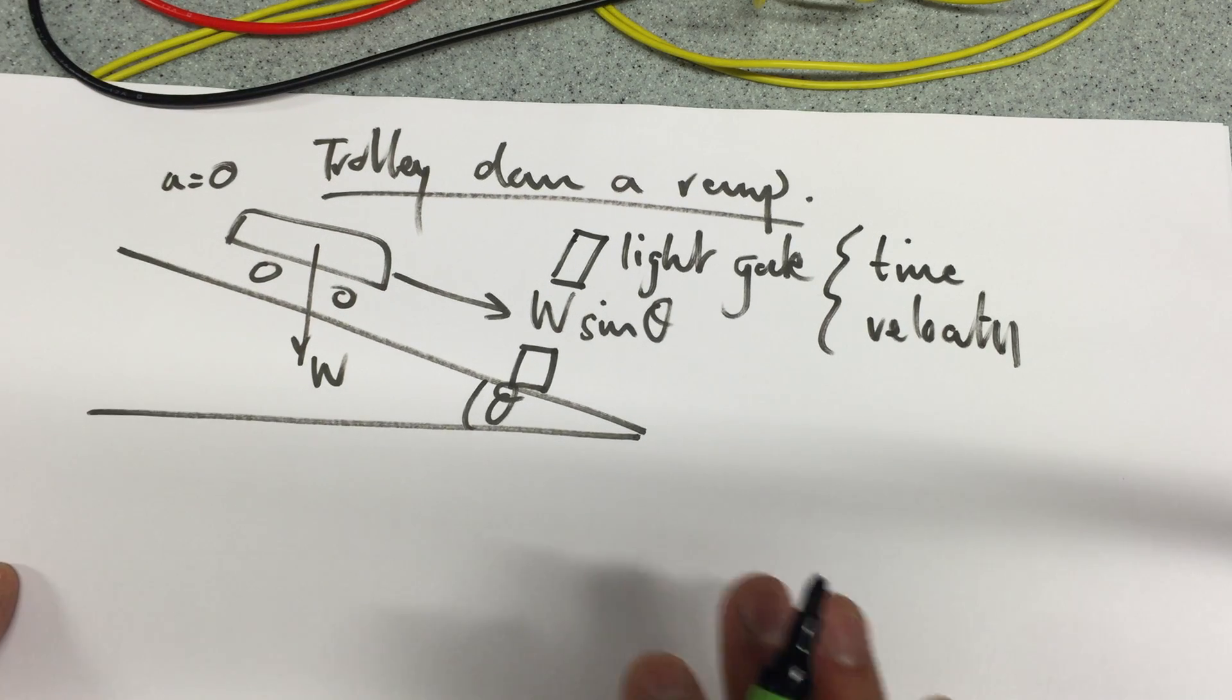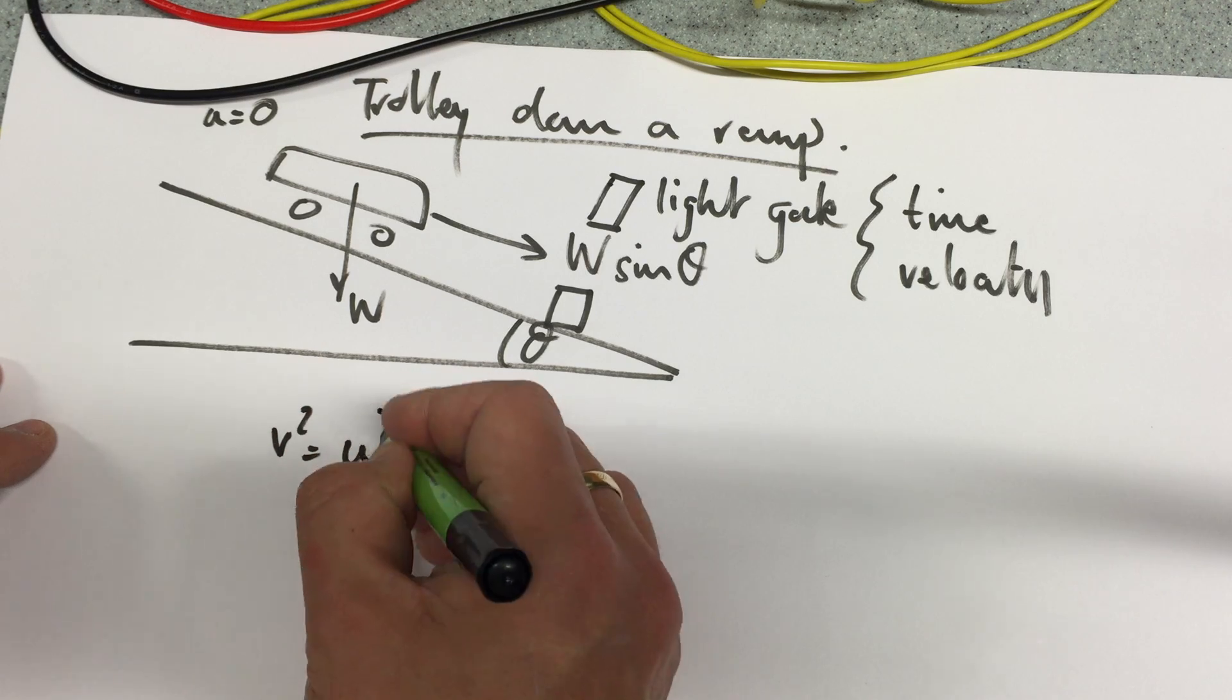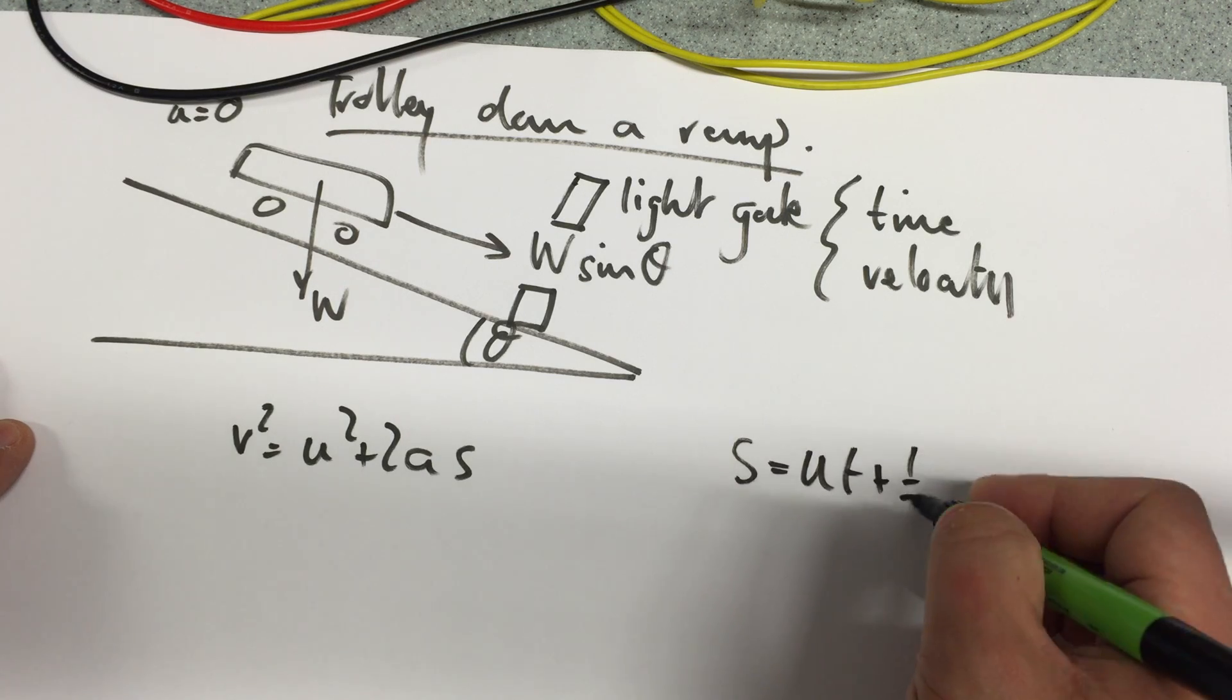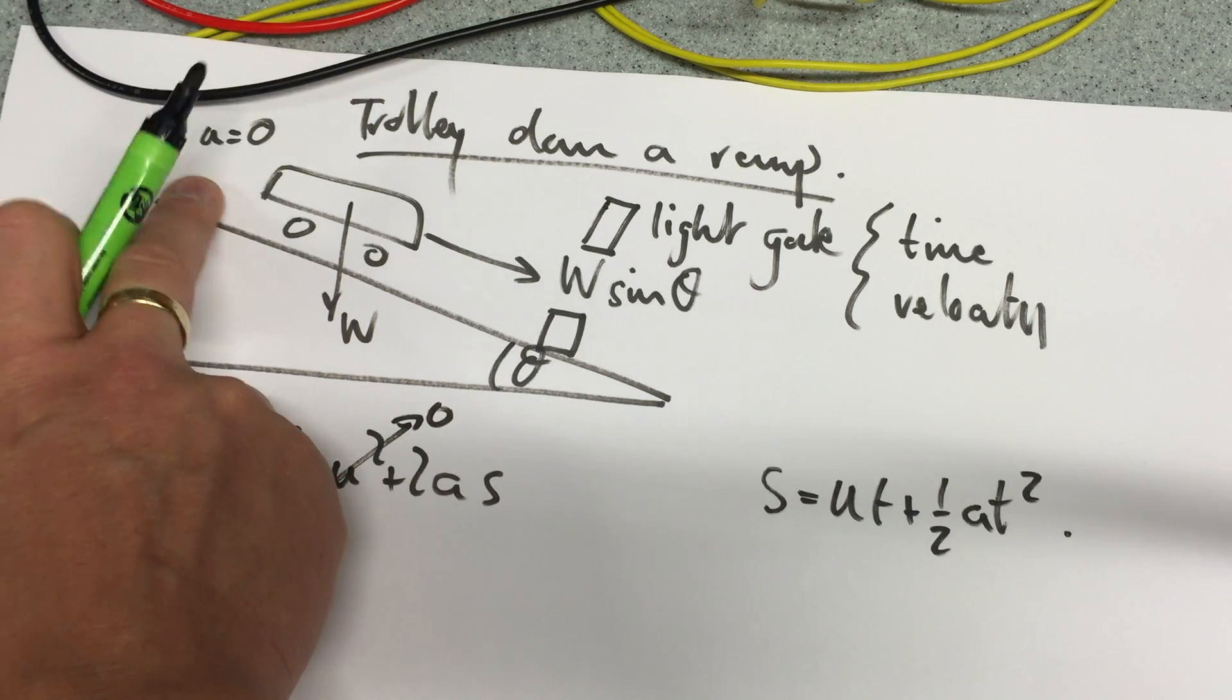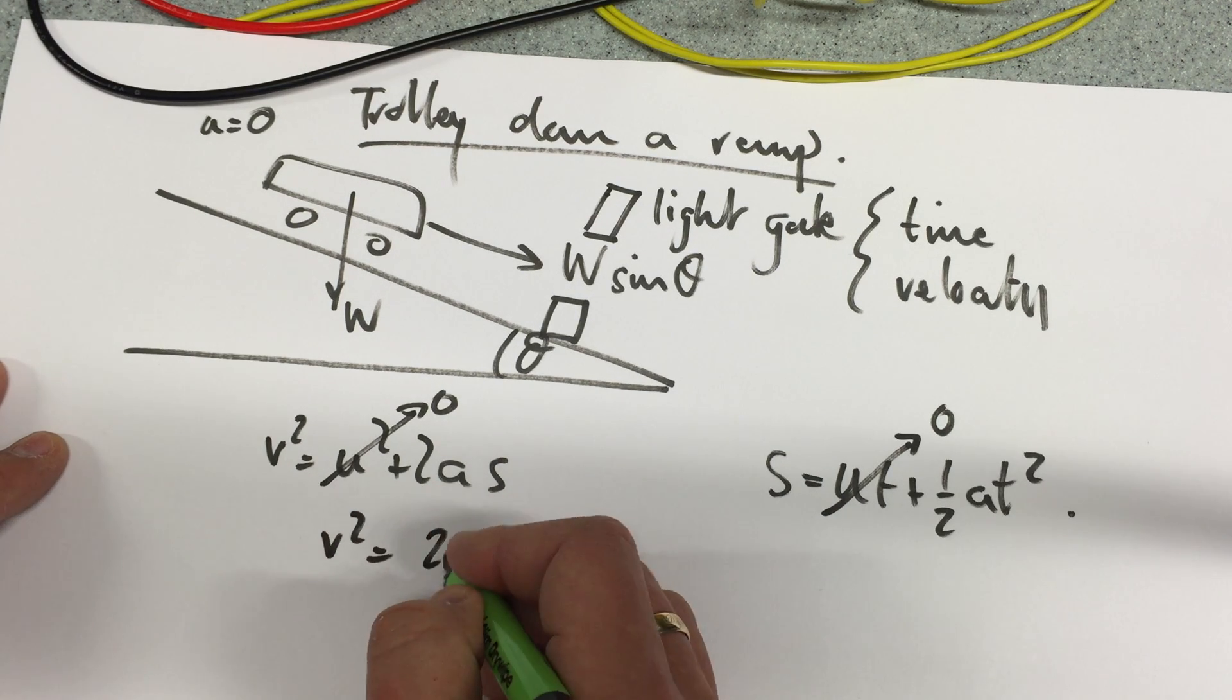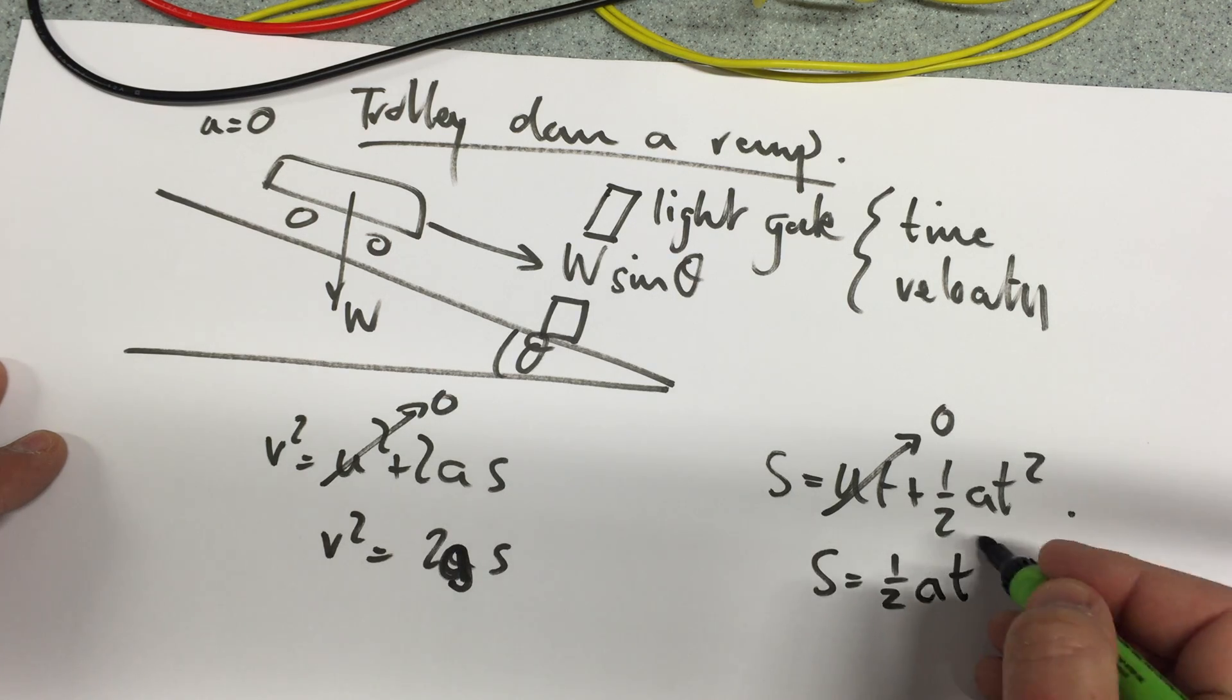Okay and then what I'm going to use is one of the two kinematic equations. I'm either going to say v squared is equal to u squared plus 2as or I'm going to say s is ut plus a half at squared. Of course this goes to zero because I'm starting it from zero speed. So I have v squared is 2as or s is a half at squared.